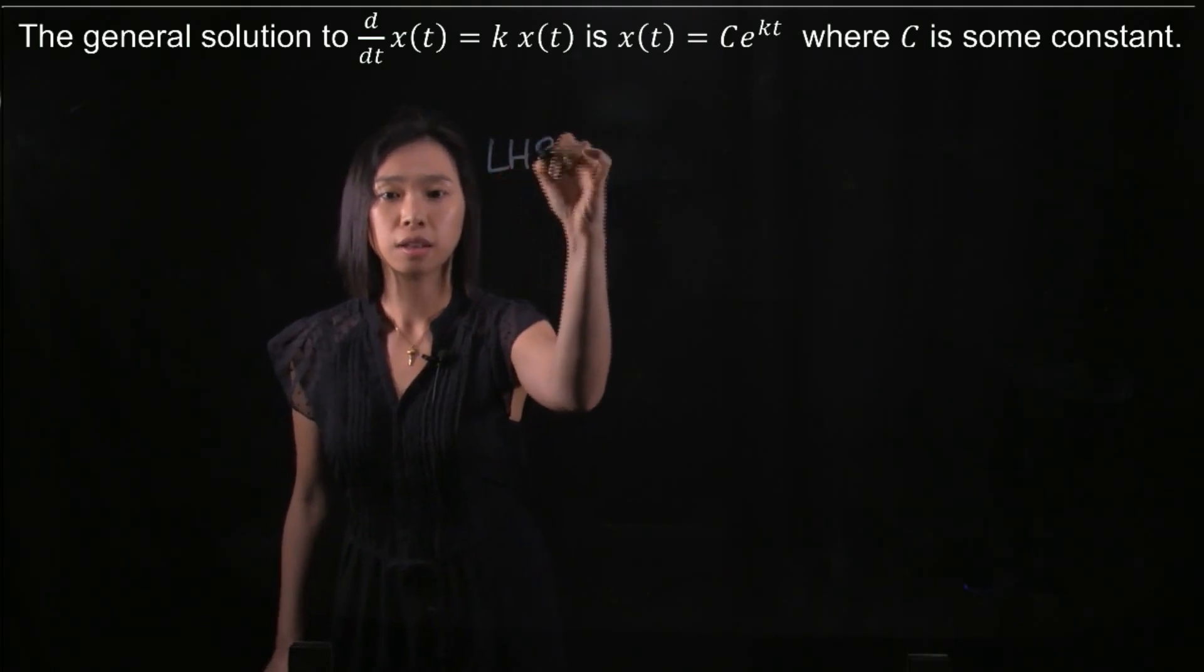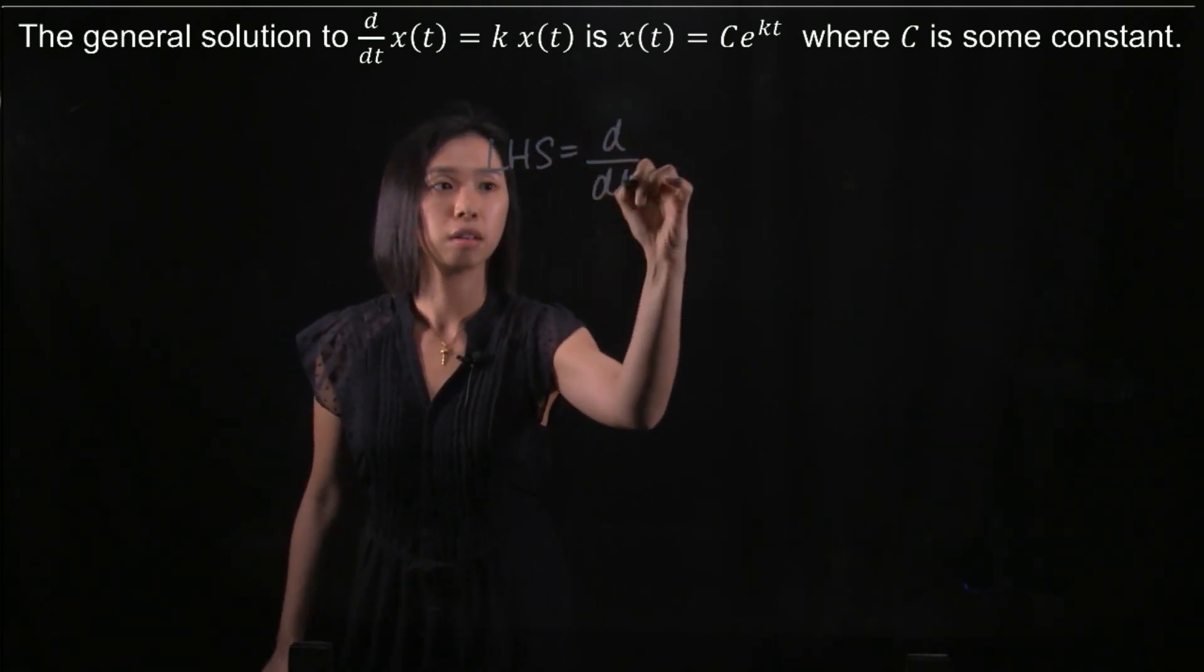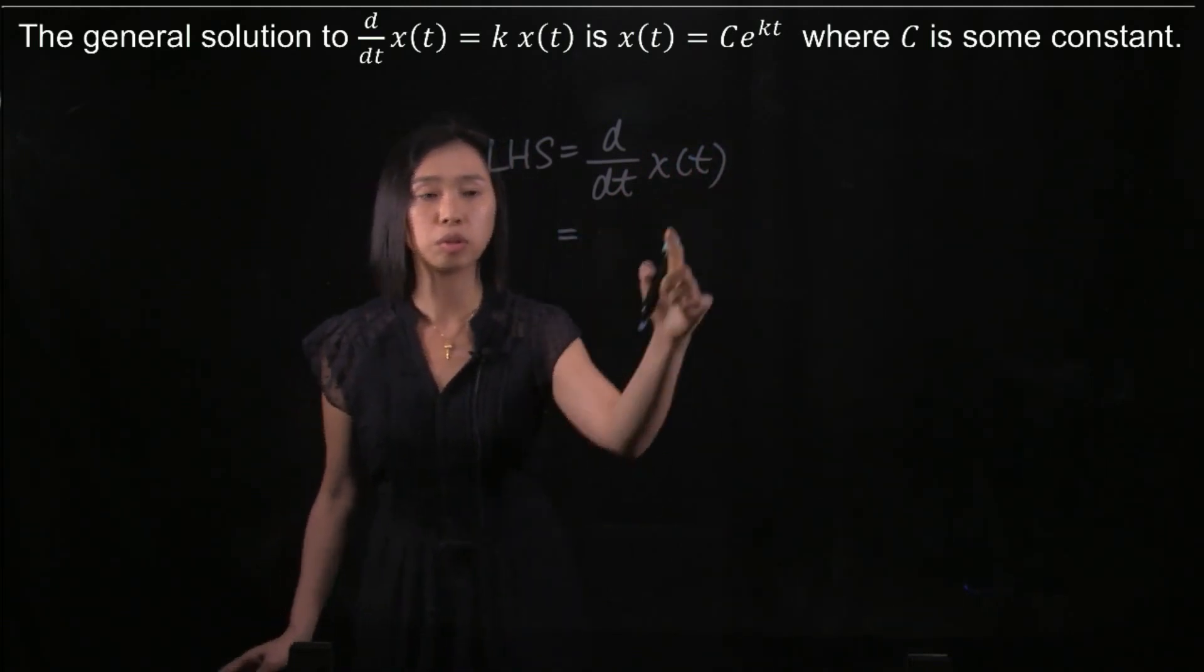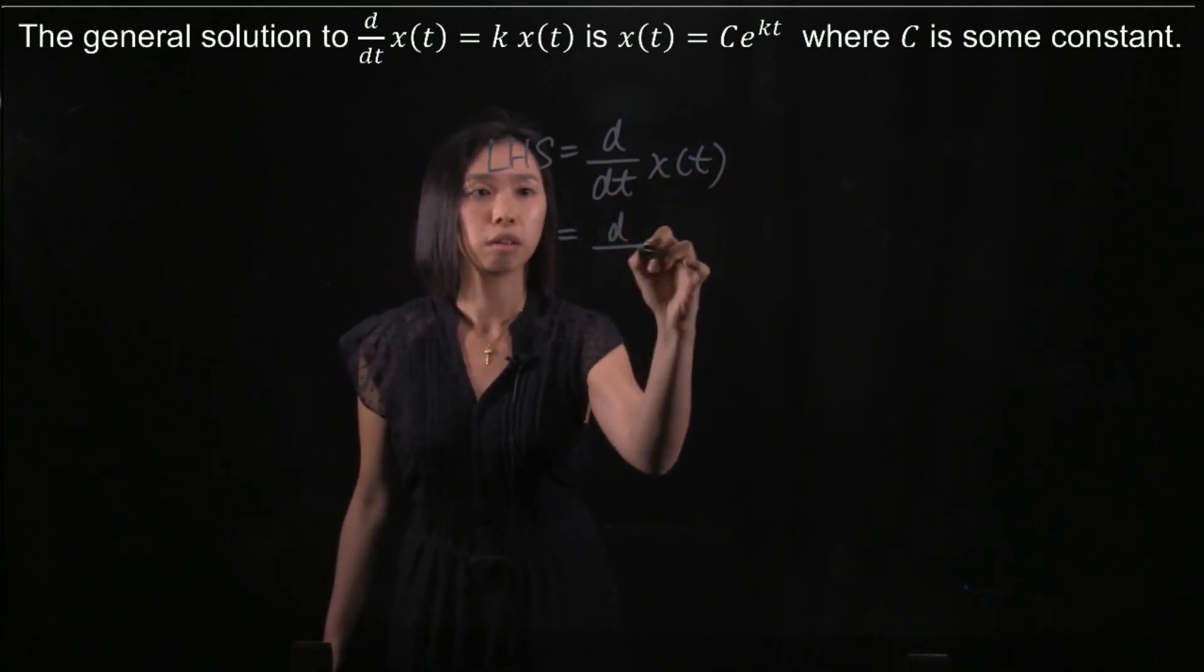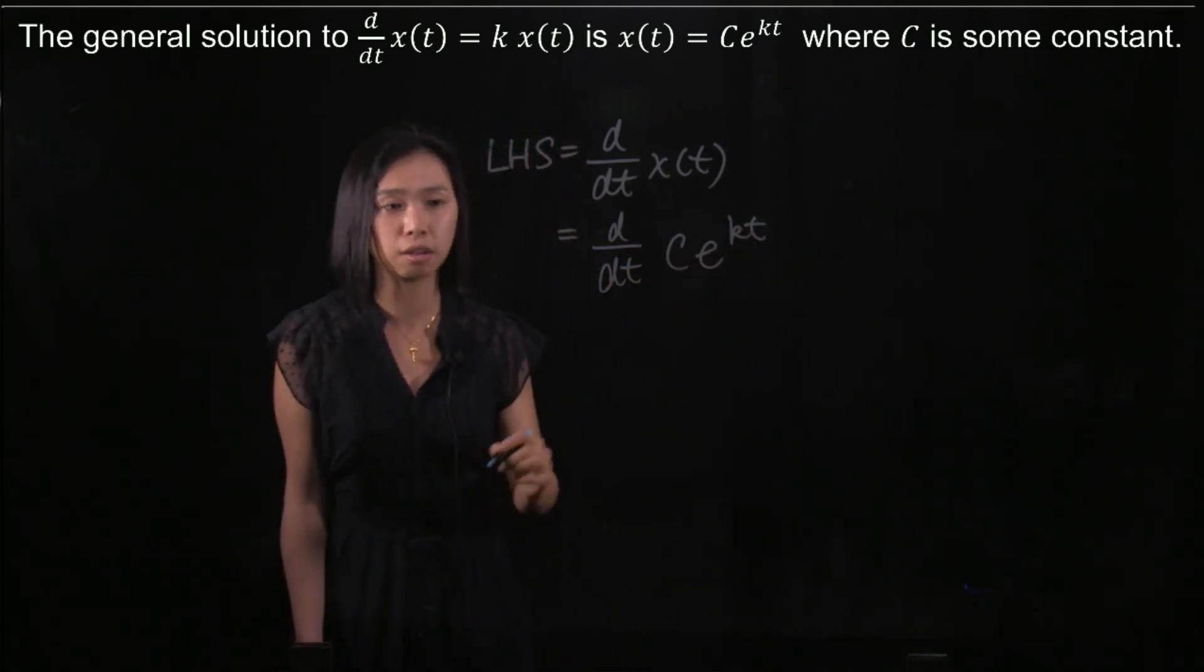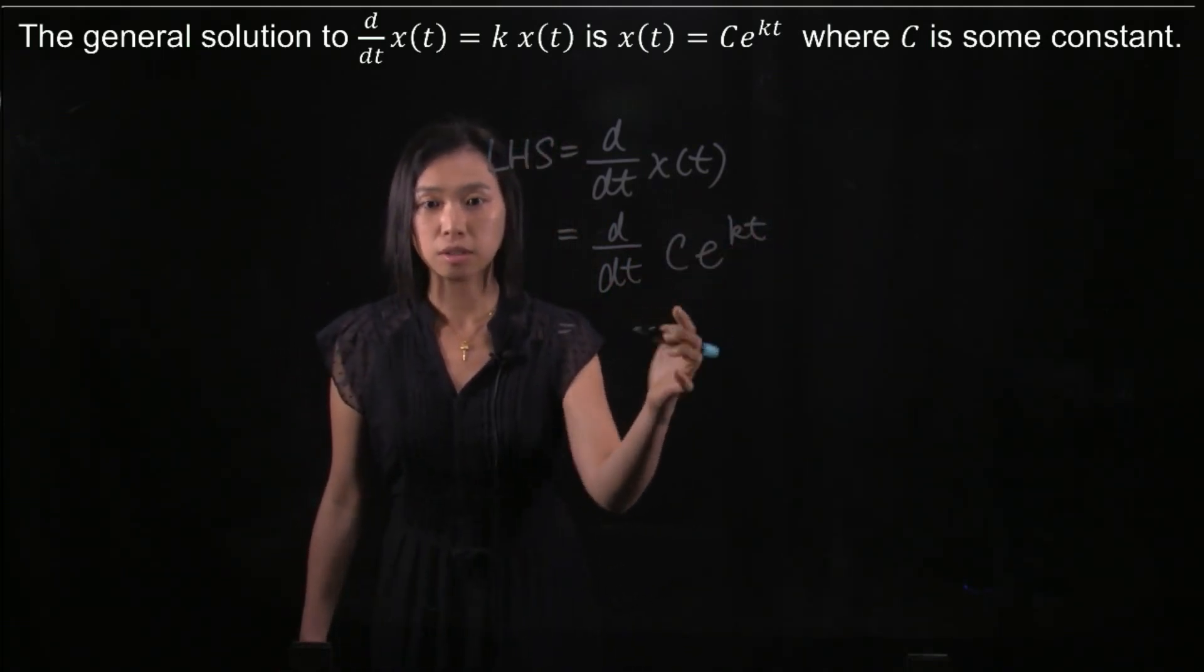The left-hand side is d/dt(x(t)). We substitute x(t) = Ce^(kt). Since C is a constant, we can take it out.